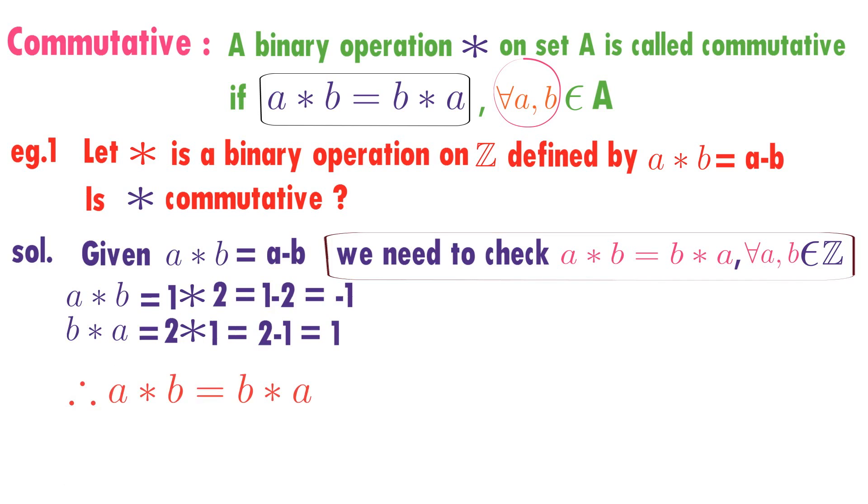Is A star B the same as B star A? No, A star B is not equal to B star A. Therefore, star is not commutative on Z when A star B is defined as A minus B.